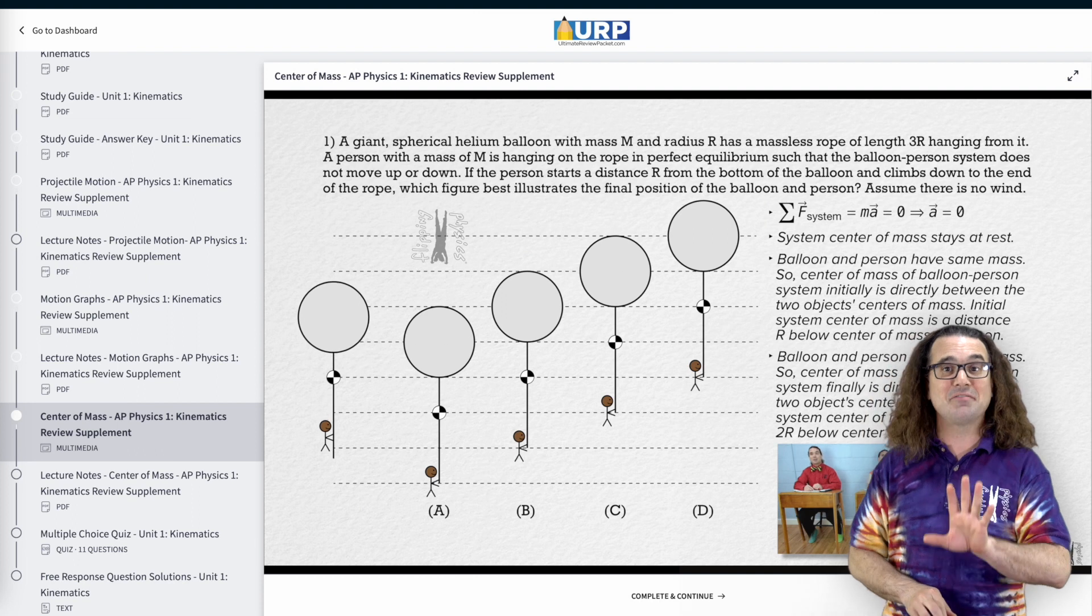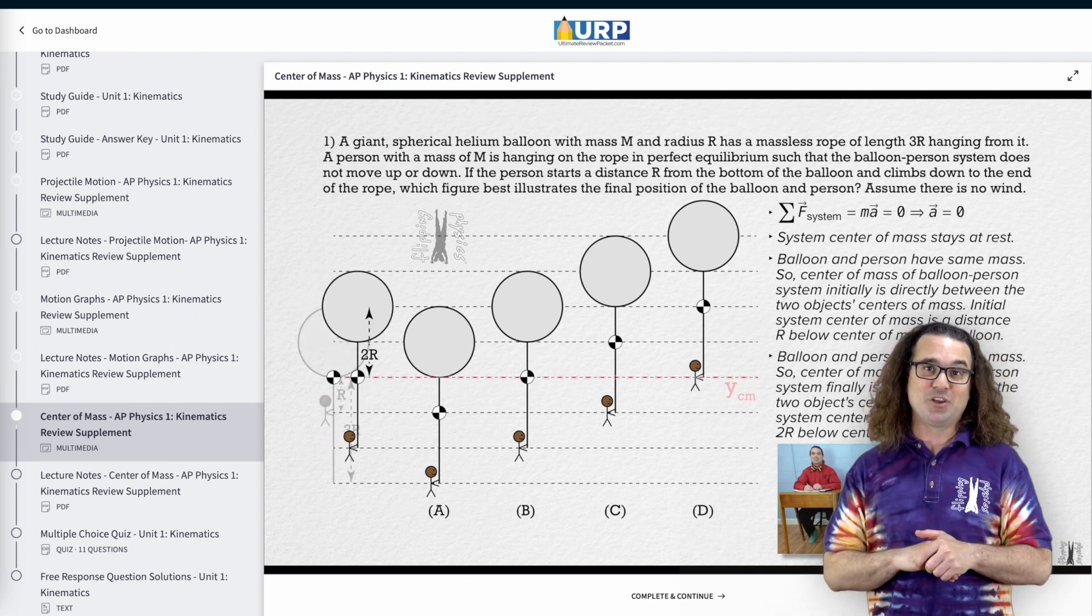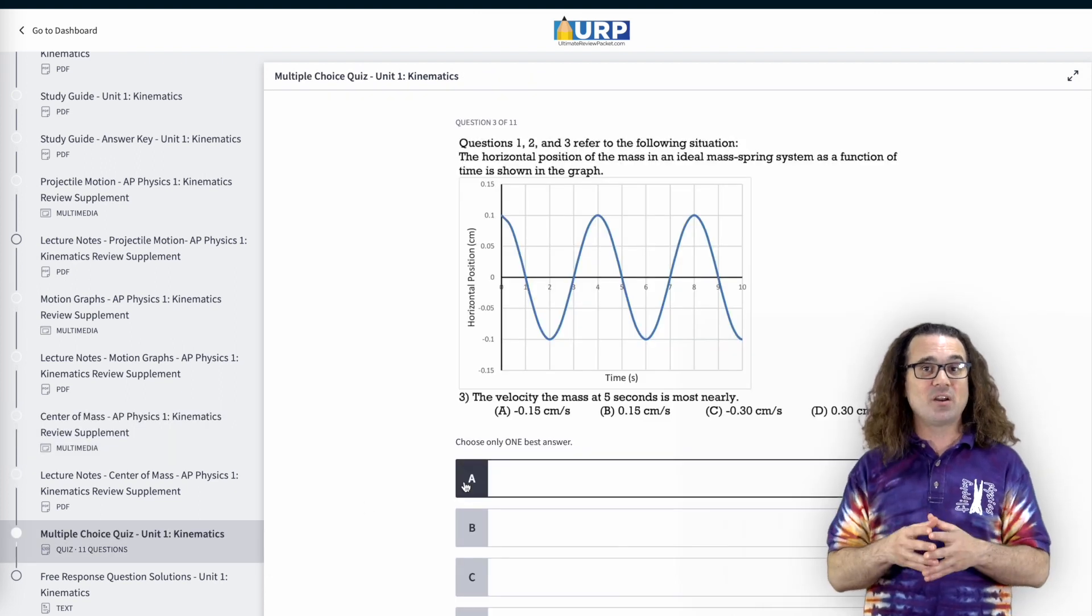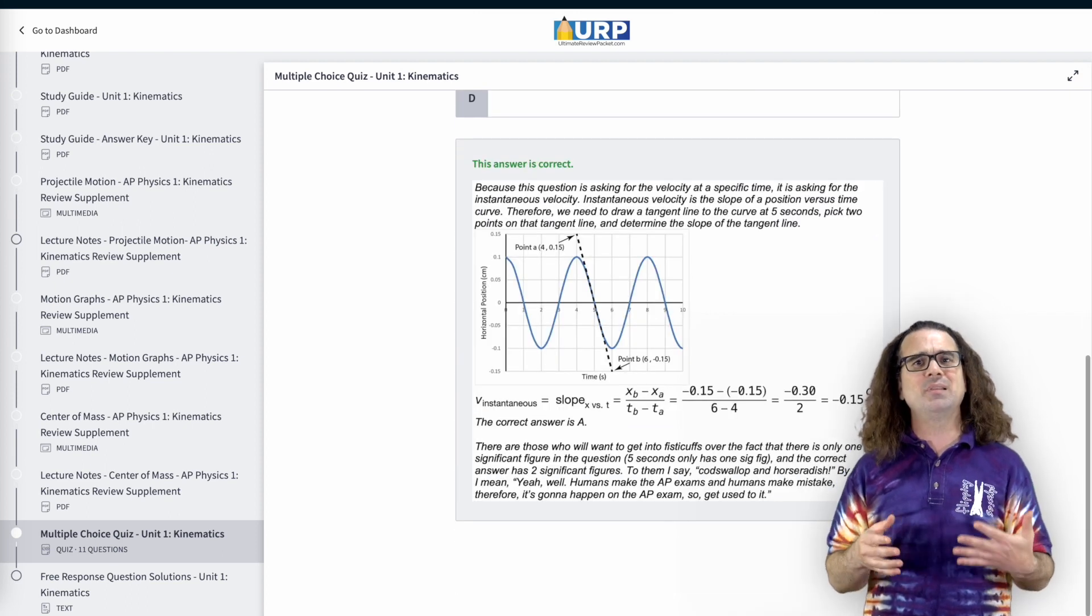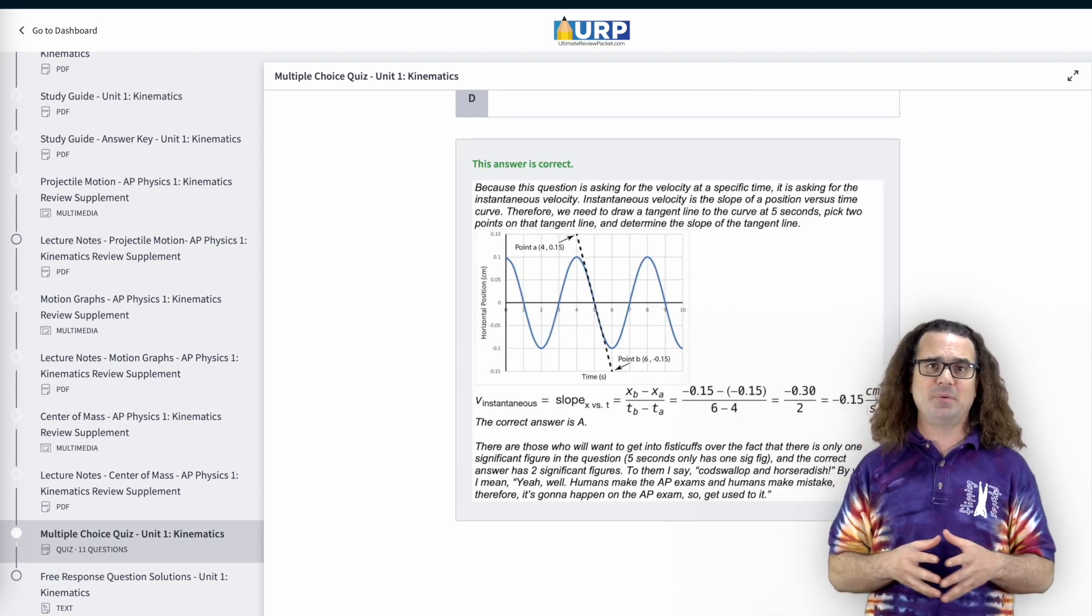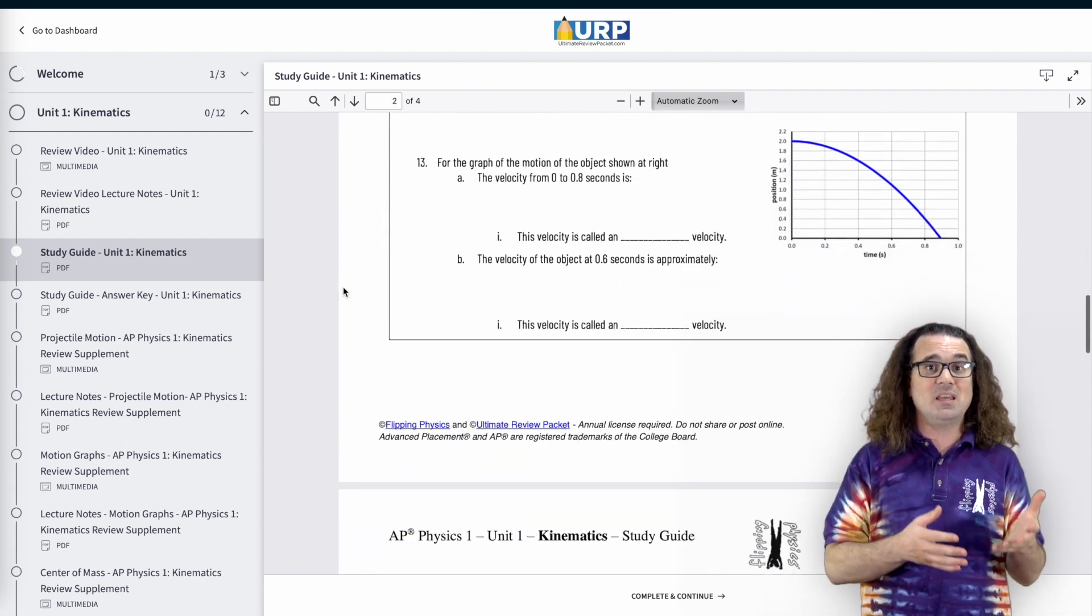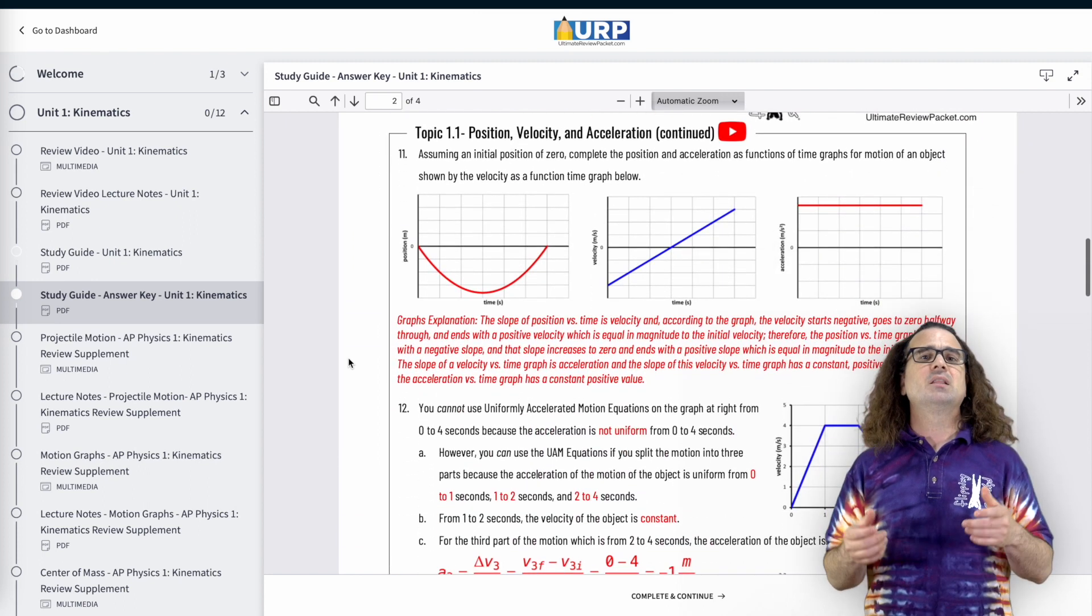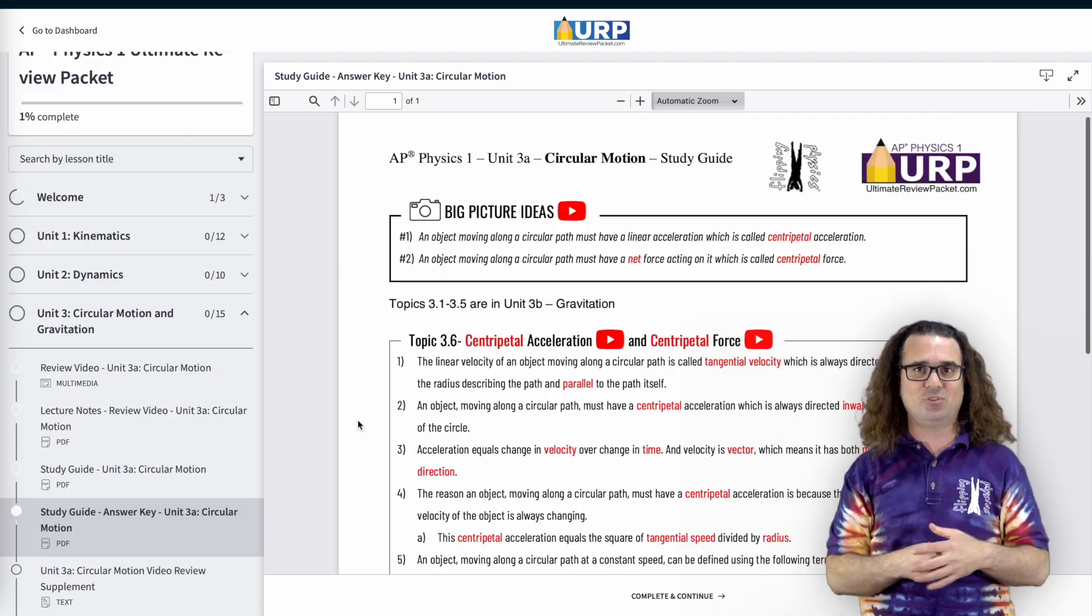You and your students will love my AP Physics 1 Ultimate Review Packet. However, you do not have to take my word for it. As a teacher, we will give you access so you can see it for yourself. So please, do not purchase a copy for yourself. We will gladly give you a free teacher trial so that you can see that you will want to place a bulk order for your students. Links to request a free trial and place an order are in the YouTube description.